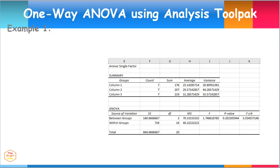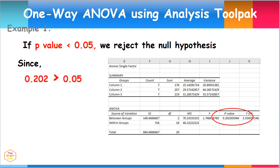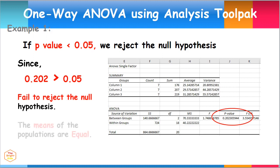Another method is determining whether the P value is less than 0.05, which is the alpha value. If this is the case, then one must reject the null hypothesis. This is not the case, since 0.202 is greater than 0.05. Therefore, we fail to reject the null hypothesis. The means of the three populations are equal, and the difference between the means is not statistically significant.